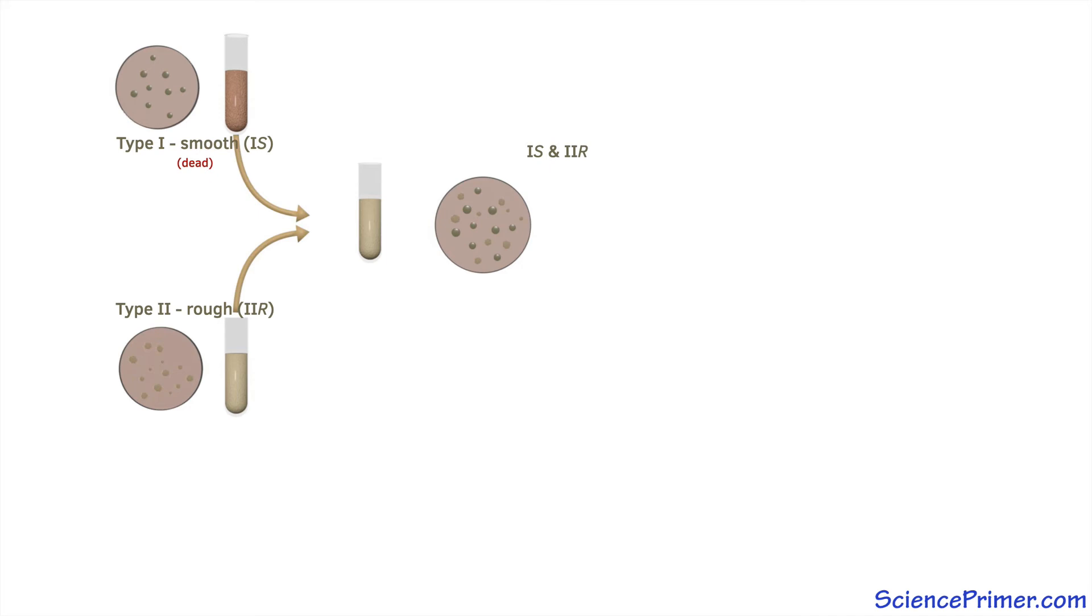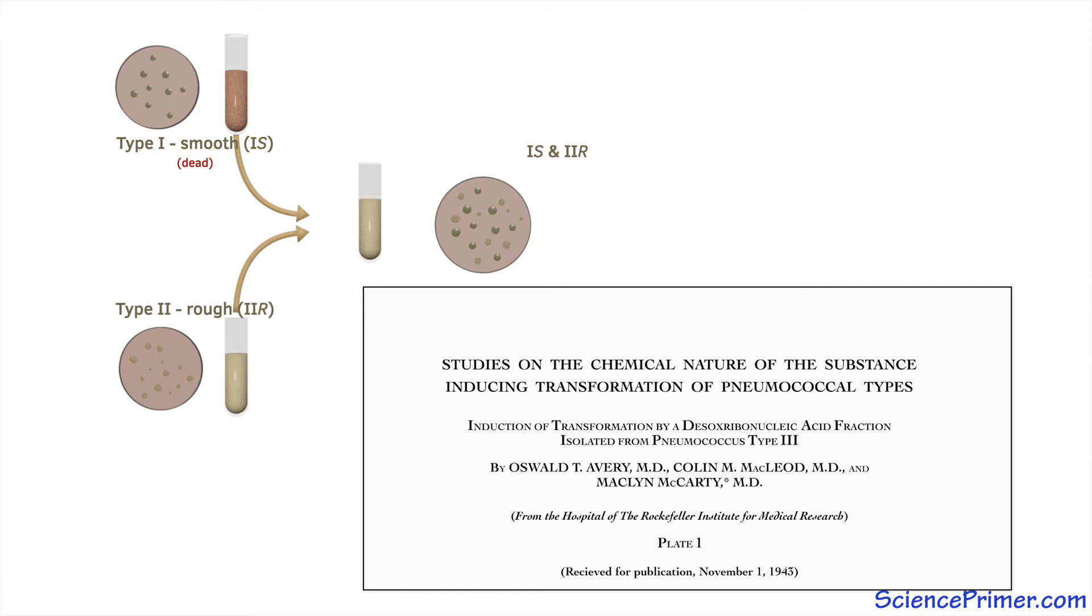Successful transformation would result in a mixture of living cells from both types. It was with this method that Avery, McLeod, and McCarty showed in a 1944 paper that the material in the dead cell debris responsible for transformation was made of DNA. Their work was very thorough.